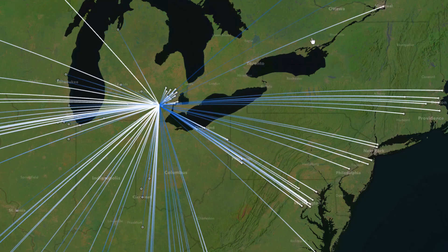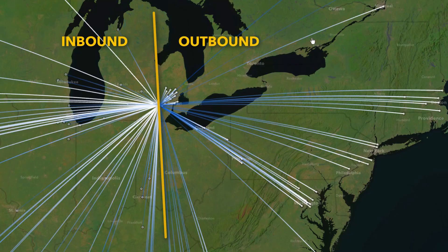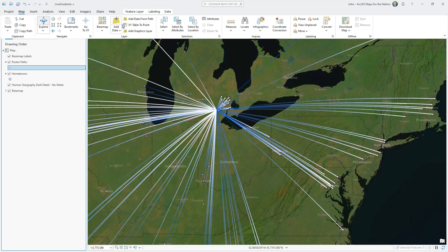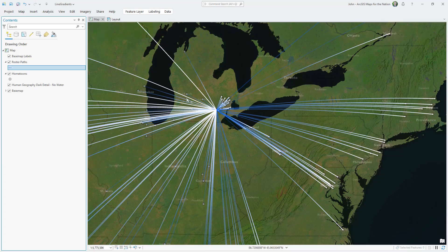Speaking of directionality, it looks like the lines on the left are inbound and the lines on the right are outbound. What gives? It's weird, but it kind of makes sense if you think about our hack. These buffered fills don't know which direction they're facing — they're just coloring in from left to right.